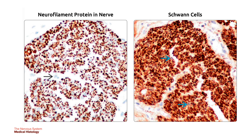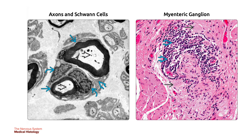On the left is a medium-power neurofilament protein stain showing a cross-section of your peripheral nerve with strongly positive fascicles of nerve fibers. The spaces in the single black arrow between the fascicles represent the perineurium. On the right, S100 protein stain shows Schwann cells staining strongly positive in the endoneurium, while the surrounding fibers in the single blue arrow are negative.